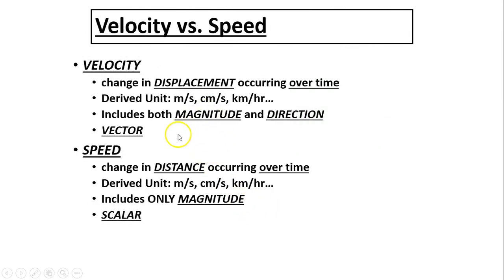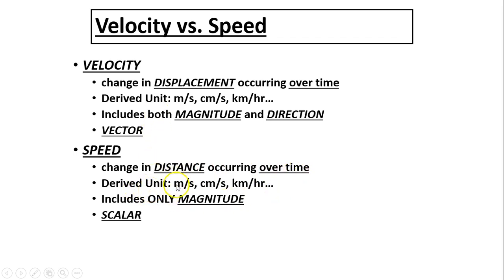Velocity is the change in displacement occurring over time — total displacement divided by total time. Its unit is derived (a combination of fundamental units): meters per second. It includes both magnitude and direction, making it a vector quantity. Speed is change in distance over time — distance divided by time. It has the same unit as velocity but includes only magnitude, so it is a scalar quantity.